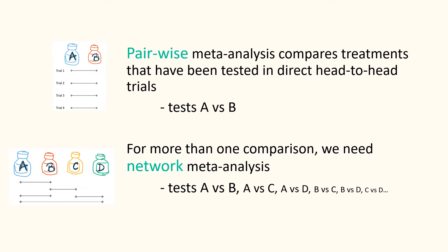Network meta-analysis combines evidence from all trials to compare all treatments in an evidence network. This means that we can get treatment differences between A and B, or A and C, B and C, and so on — the treatment difference between any combination of treatments, even if they have not been directly compared in a trial.